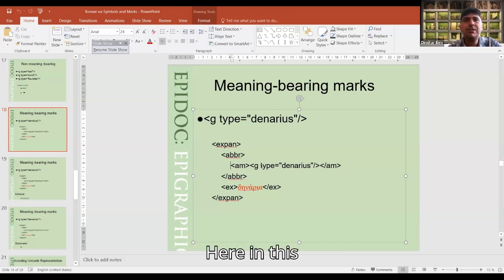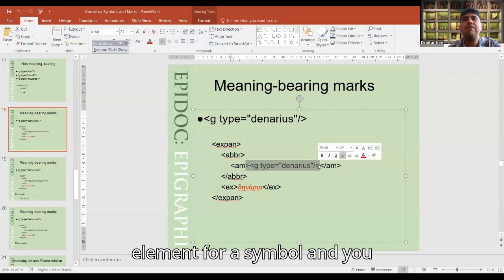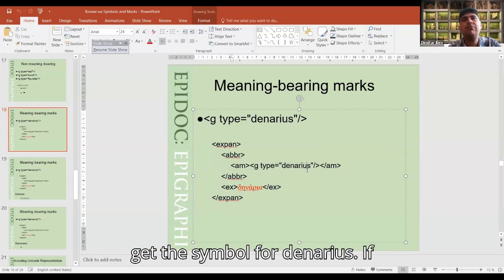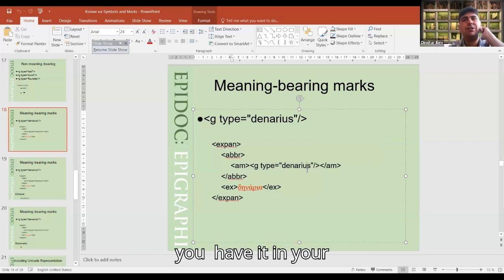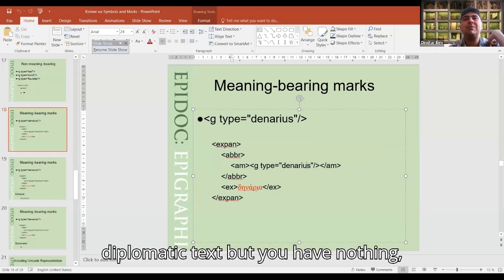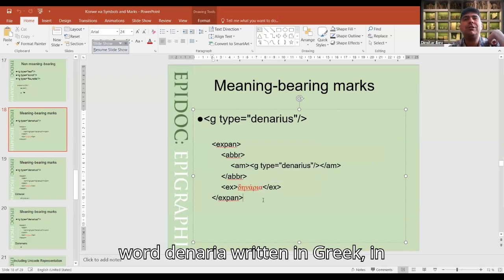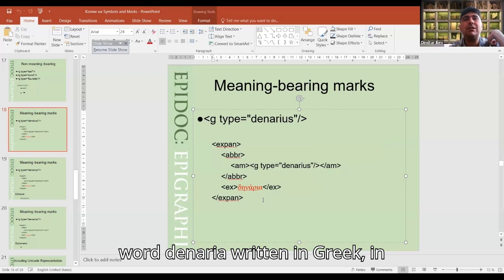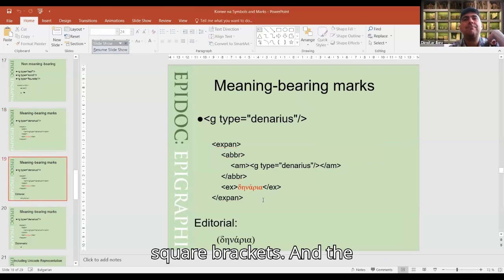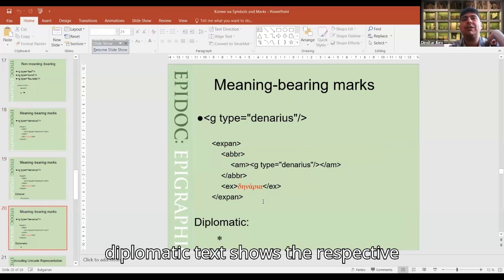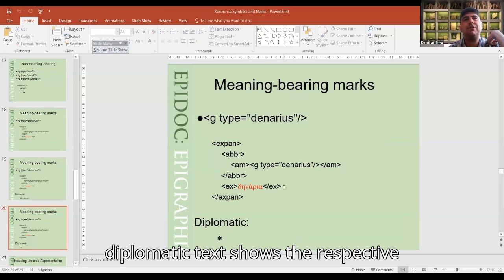Here in this amma tag you simply put the empty element for a symbol and you get the symbol for denarius. If you have it in your diplomatic text but you have nothing than the expansion of abbreviation, the word denaria written in Greek in square brackets, and the diplomatic text shows the respective symbol.